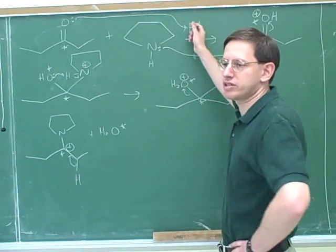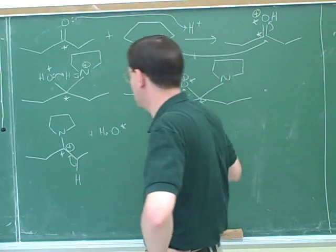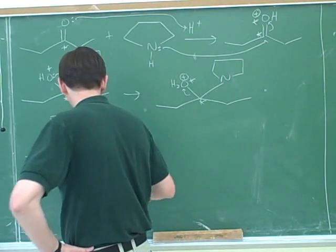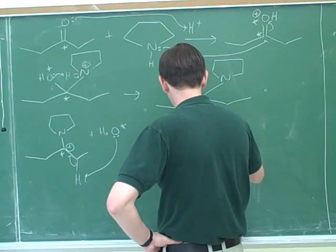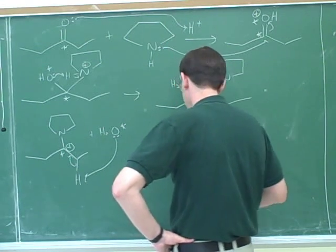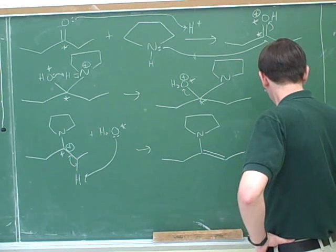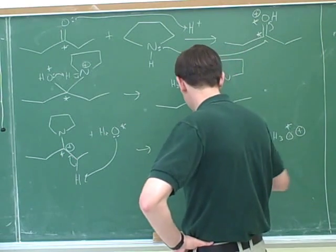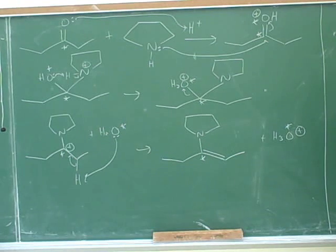If I told you who the acid was here, you could use its conjugate base to take the proton too. For example, if this came from sulfuric acid, you could use the hydrogen sulfate to take this, but the water is fine. I'm going to keep putting these asterisks in to show what happened to the former carbonyl carbon. This is an enamine.